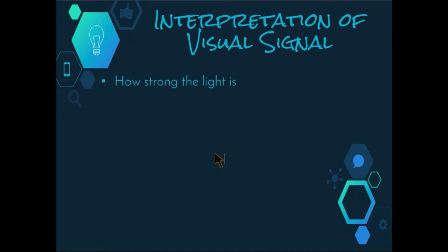So firstly, how strong the light is, how many rods and cones are stimulated, and that comes in when we're looking at how we perceive color, which we'll be talking about a little bit later.